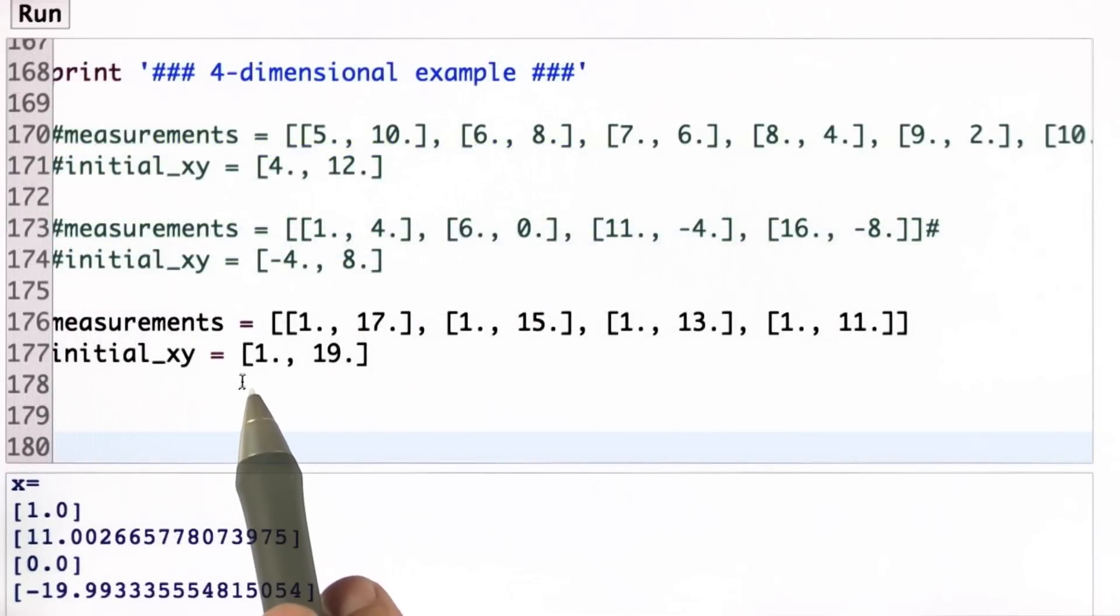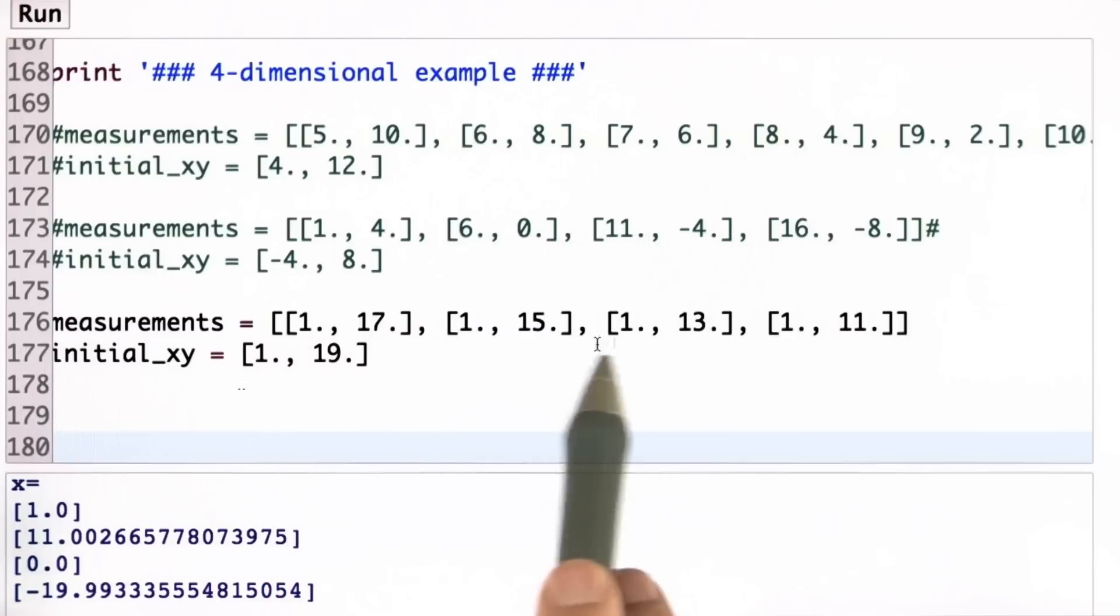Finally, for our third example, where the first coordinate doesn't change at all, you get the correct 1 over here, and velocity of 0. Second coordinate goes from 19, 17, all the way to 11. You get 11 over here, and velocity of minus 20.